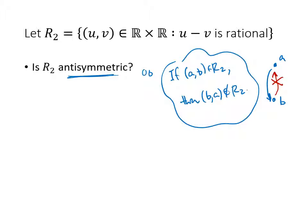We can start playing around with this. What we'd be looking for are numbers a and b where (a, b) is in my relation, but (b, a) isn't. We start with (a, b) being in our relation. You can be as creative as you want here. Maybe you have π and then π - 1/2. In this case, that's my a, that's my b, and a - b is π - (π - 1/2), that's 1/2, and that's rational. So that pair of numbers would be in my relation.